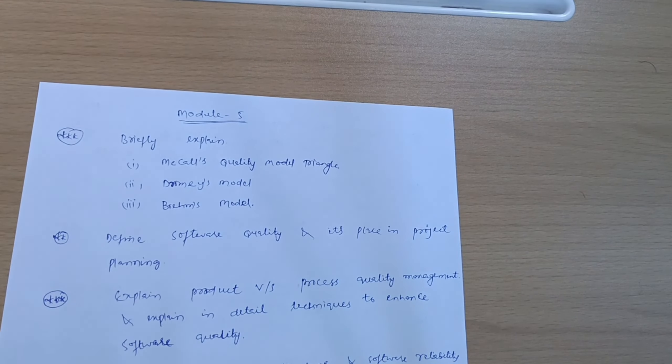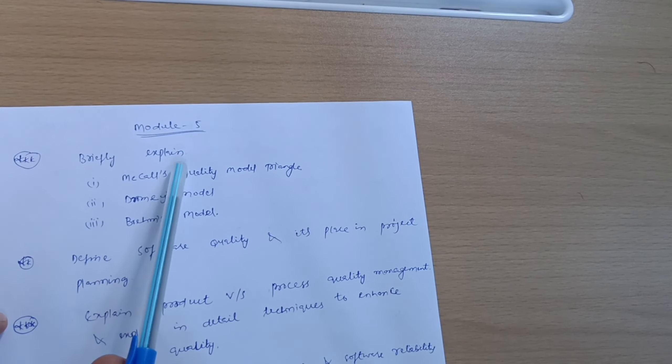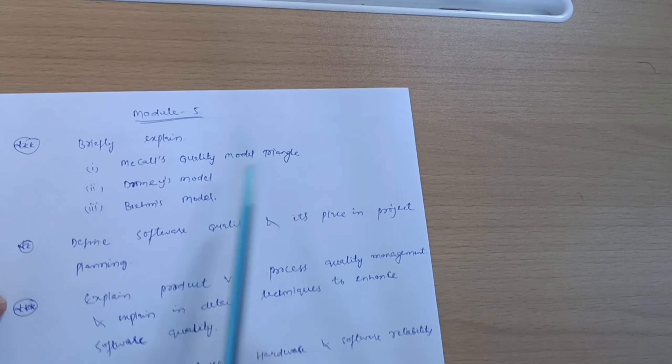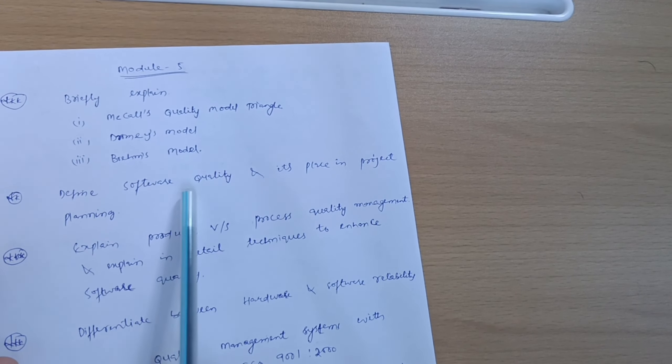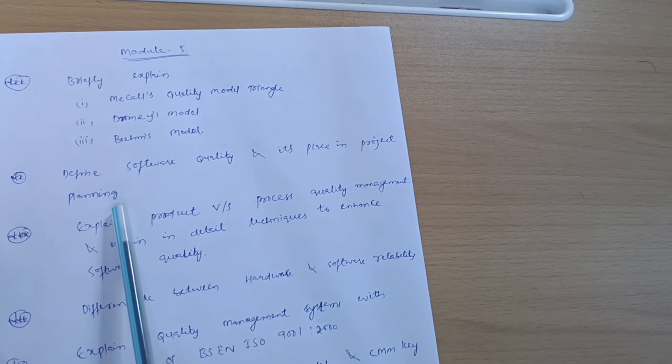This is all about Module 4. Now let us discuss the last module. Module 5: Briefly explain McCall's quality model triangle, Dromey's model, and Boehm's model.